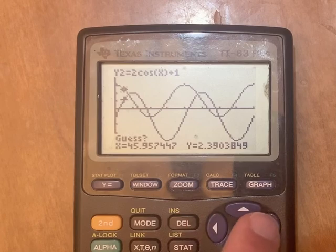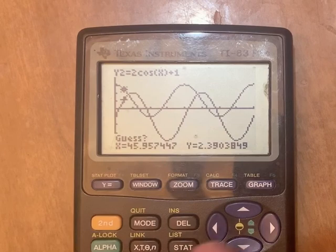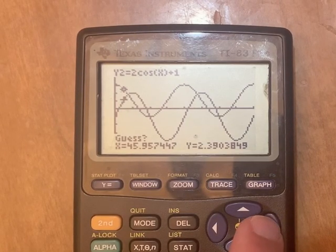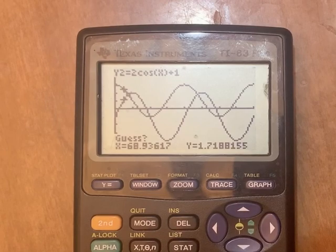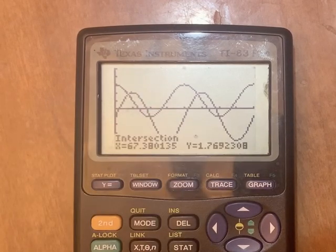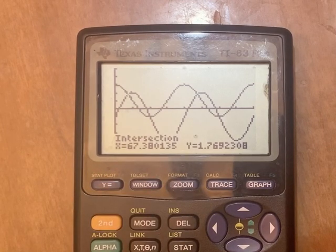And then when it says guess, now you've got to move your cursor close to an intersection. Because there are four different intersections on this graph and the calculator has no idea which one you want. So if you get close to this one and hit enter, then it starts spiraling around a little bit. And it says that this intersection is about 67.4 degrees, perhaps.